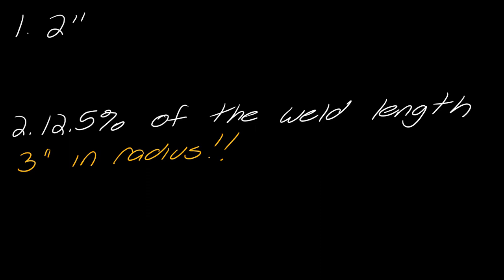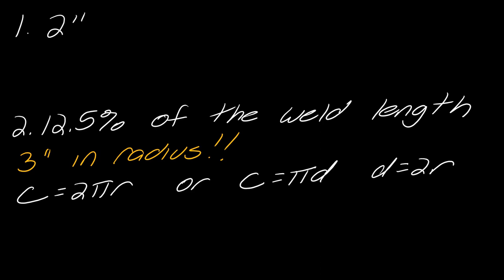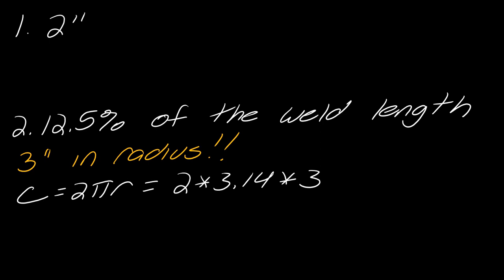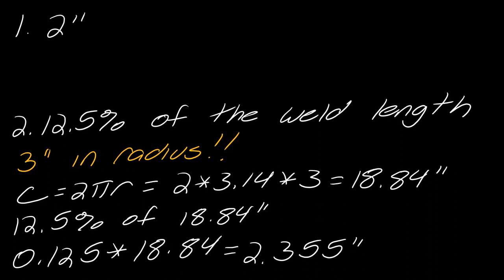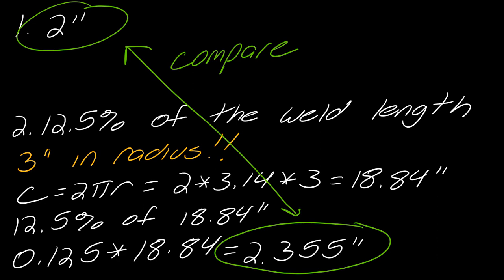Three inches in radius changes things. The circumference can be calculated as 2πr or as π × D where D = 2r — either way gives the same answer. Using 2πr: 2 × 3.14 × 3 = 18.84 inches. Now, 12.5% of 18.84 = 0.125 × 18.84 = 2.355 inches. We're still not done — we need to compare.